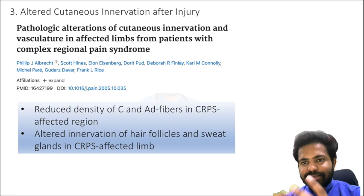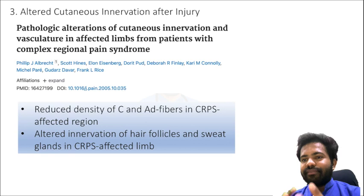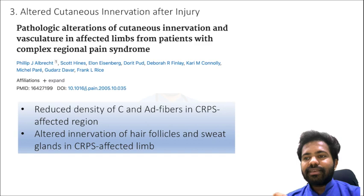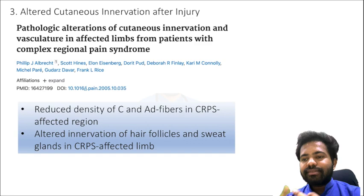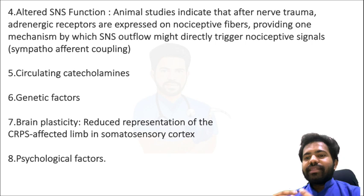Another theory involves altered cutaneous innervation. Studies by Albert et al. found pathological alterations of the cutaneous innervation and vasculature in affected limbs from CRPS patients. They found a reduced density of C-fibers and A-delta fibers in the CRPS-affected region, and also altered innervation of the hair follicles and sweat glands in the affected limb.